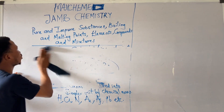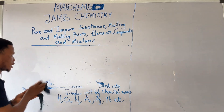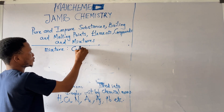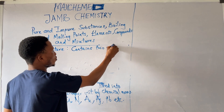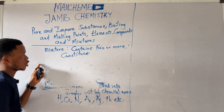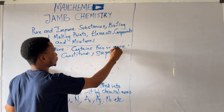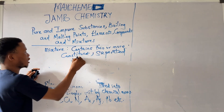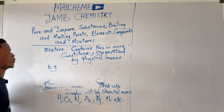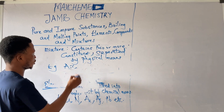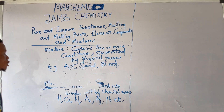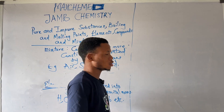So the last one here is mixture. Mixture contains two or more constituents. The constituents can either be elements or compounds, but they can be separated by physical means. Examples include air, sand, and blood. These are examples of mixtures because they can be separated by physical means.